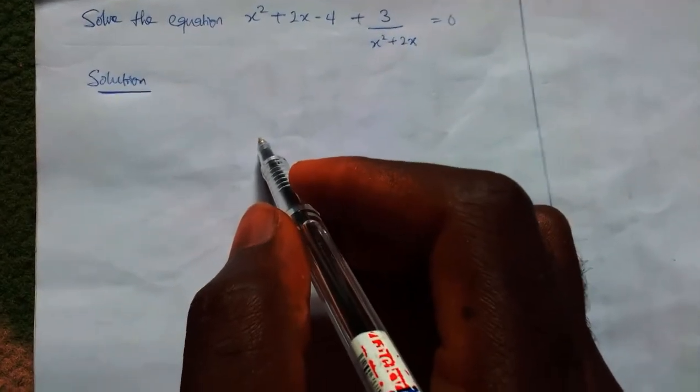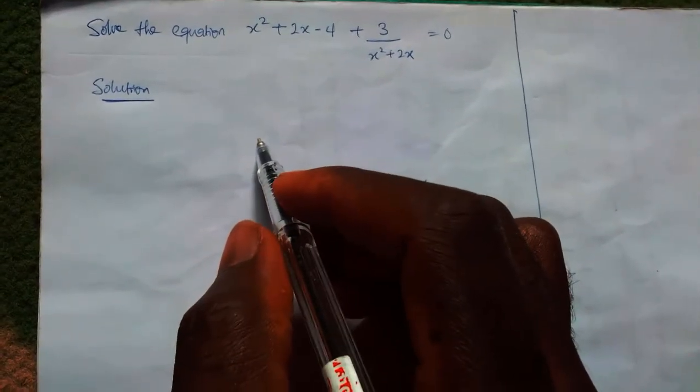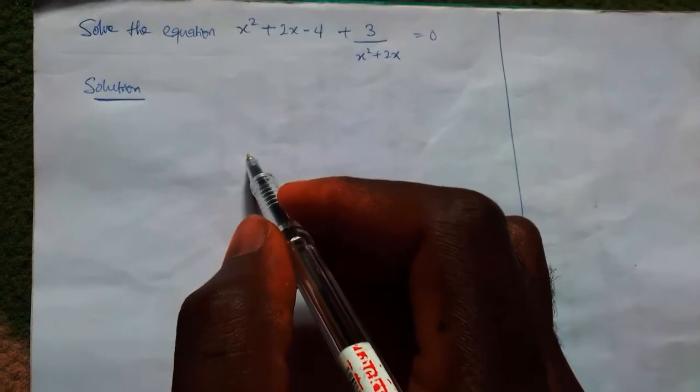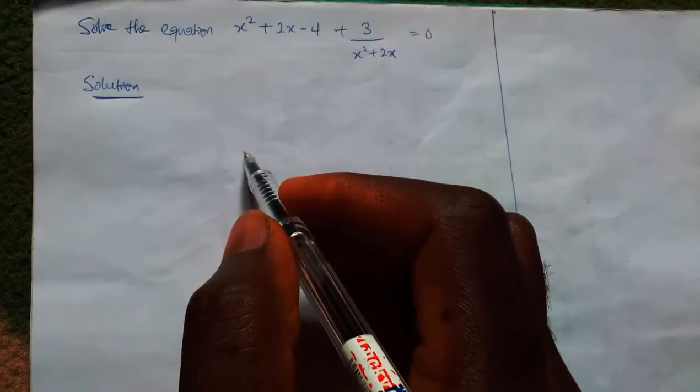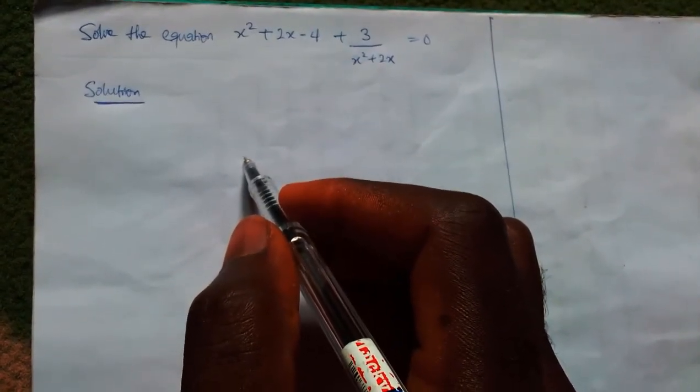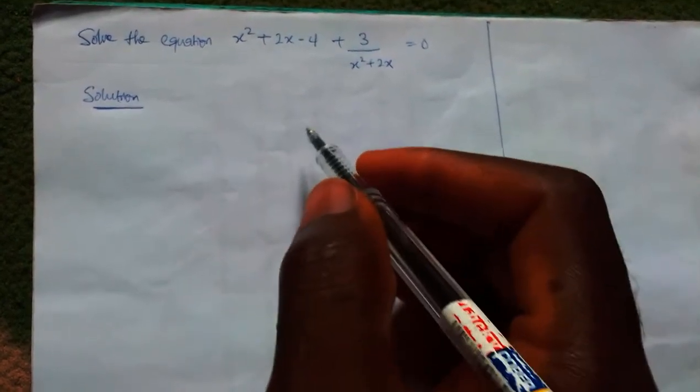Good day guys, welcome back to the King's Spirit class. In today's class we're looking at this question. I will solve this question in two minutes. The question is given as x squared plus 2x minus 4 plus 3 over x squared plus 2x.